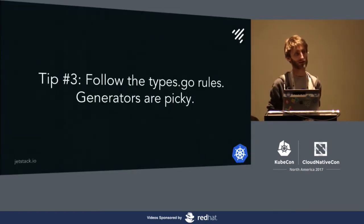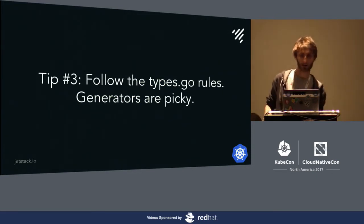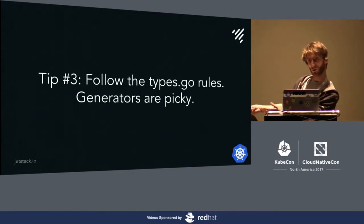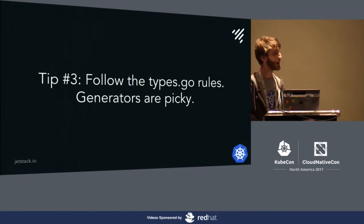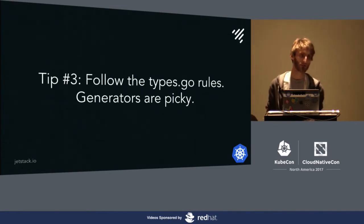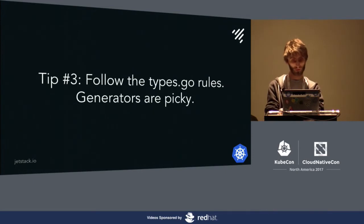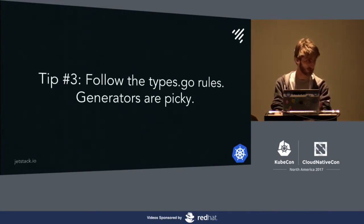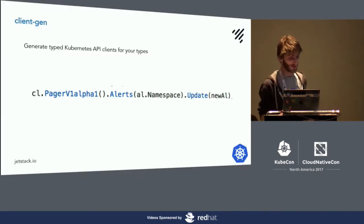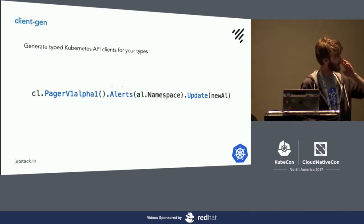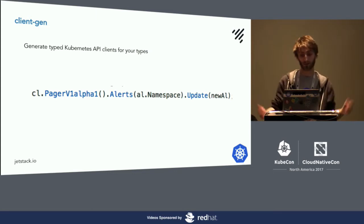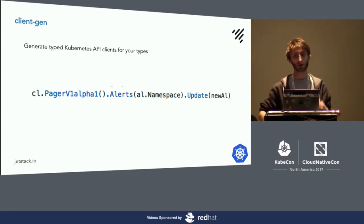Follow the rules with these generators. If anyone's used them already, you might have run into random panics or not got the code you expected — you have to follow the rules. These are documented in the client-go repository. I've tried to fight it — hours wasted, basically. The client generator gives us things like: our client, pager v1alpha1 dot alerts, then namespace, and we can do an update. Under the hood that's hitting a REST API and going to perform this update for us.